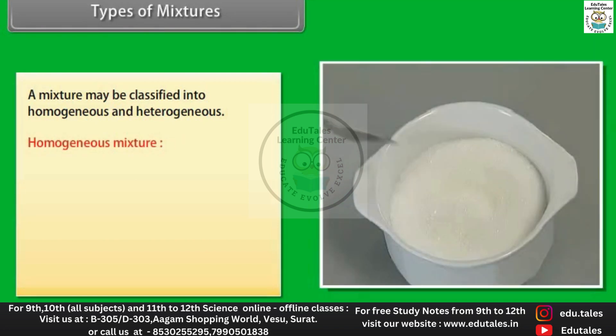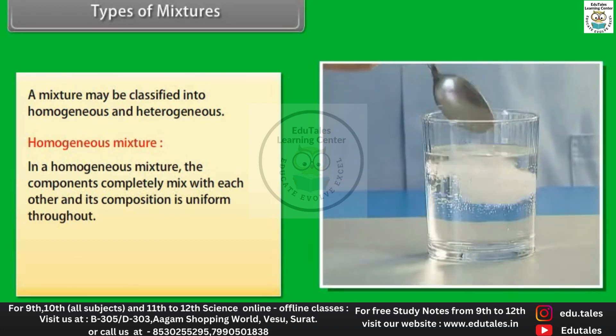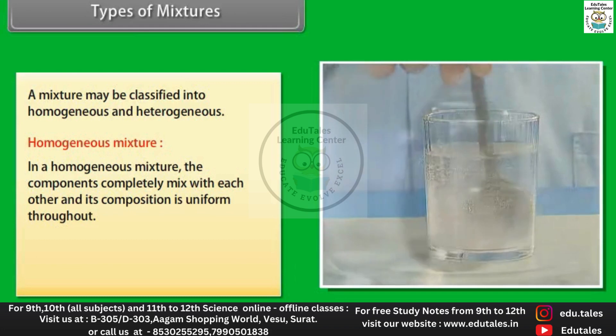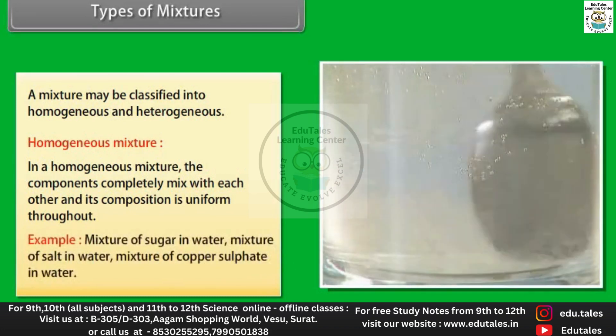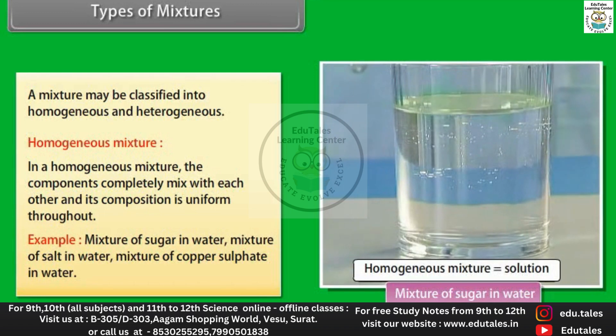In a homogeneous mixture, the components completely mix with each other and its composition is uniform throughout. For example, mixture of sugar in water, mixture of salt in water, mixture of copper sulfate in water.